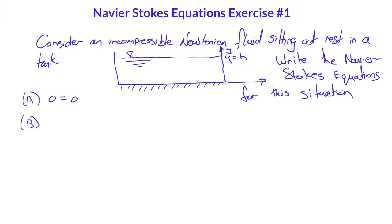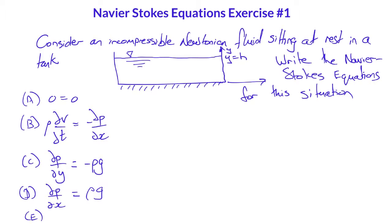What did you get? Just 0 equals 0 everywhere, or rho del v del t equals minus del p del x, or del p del y equals minus rho g, or del p del x equals rho g, or del p del t equals rho g.